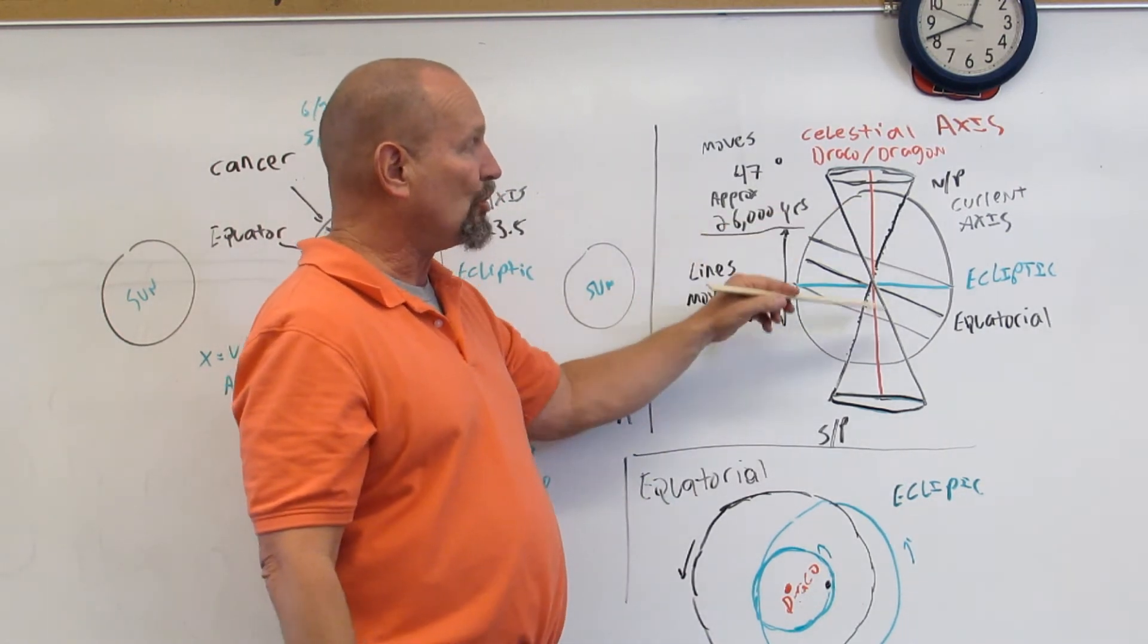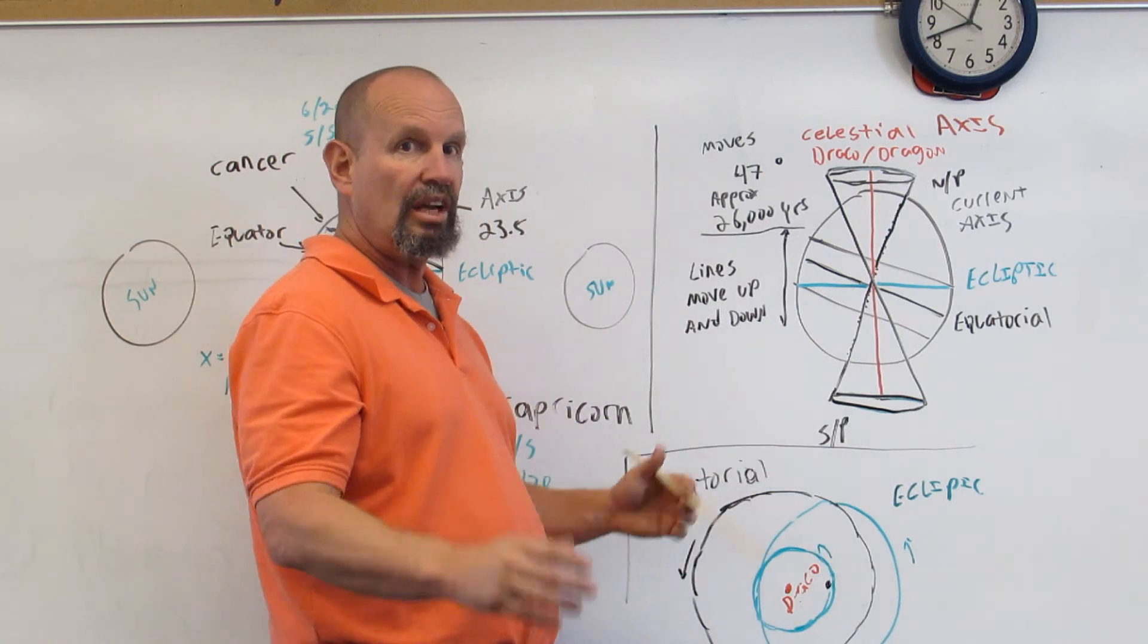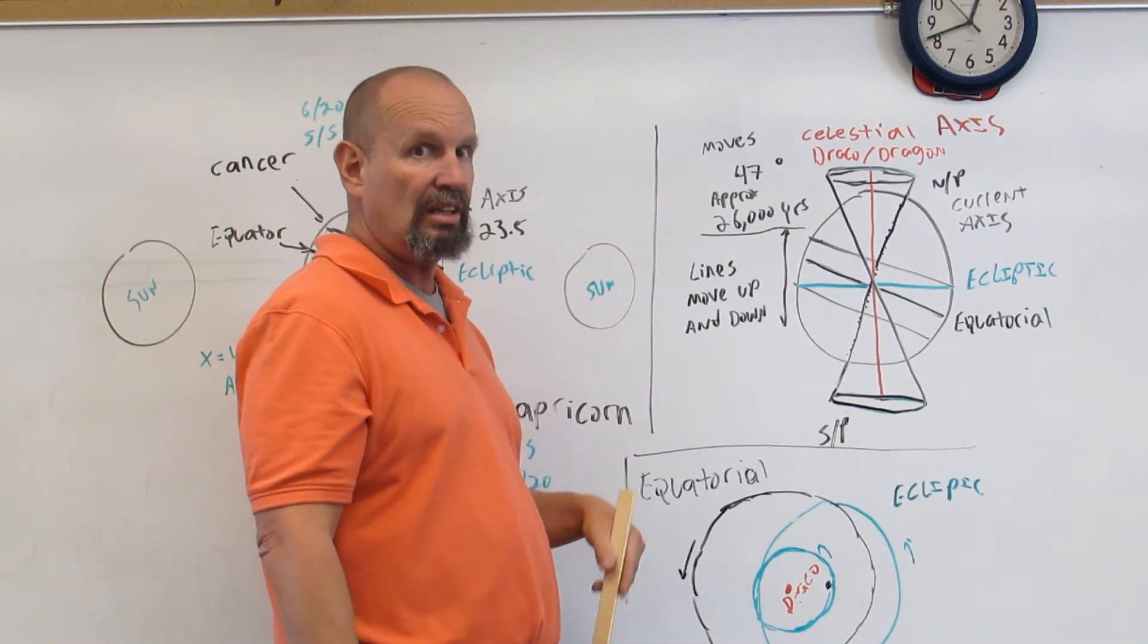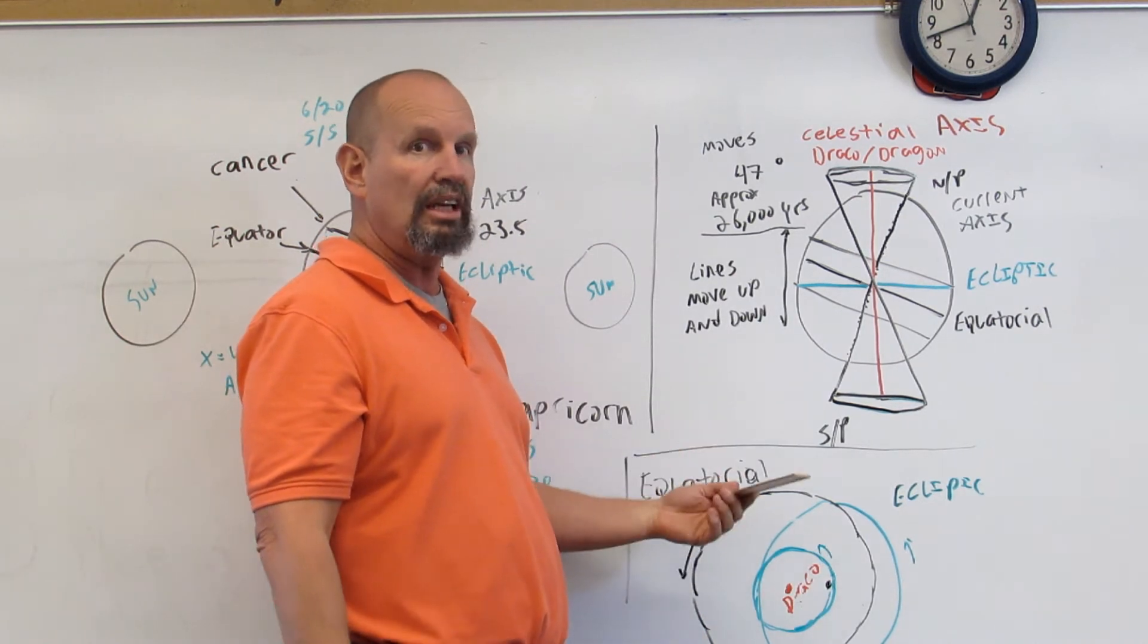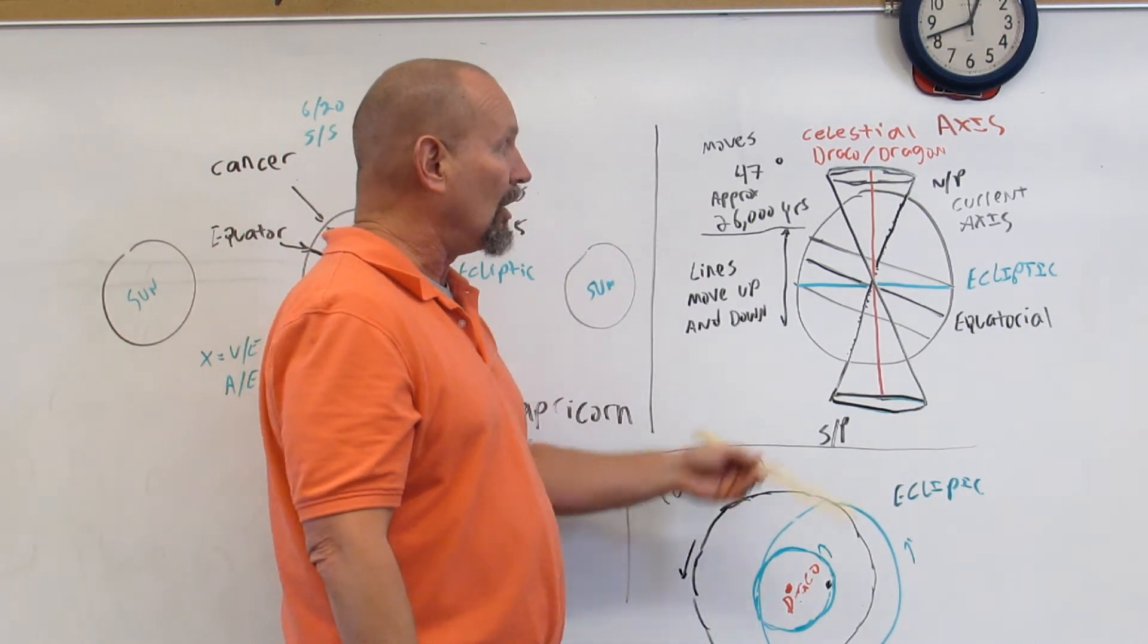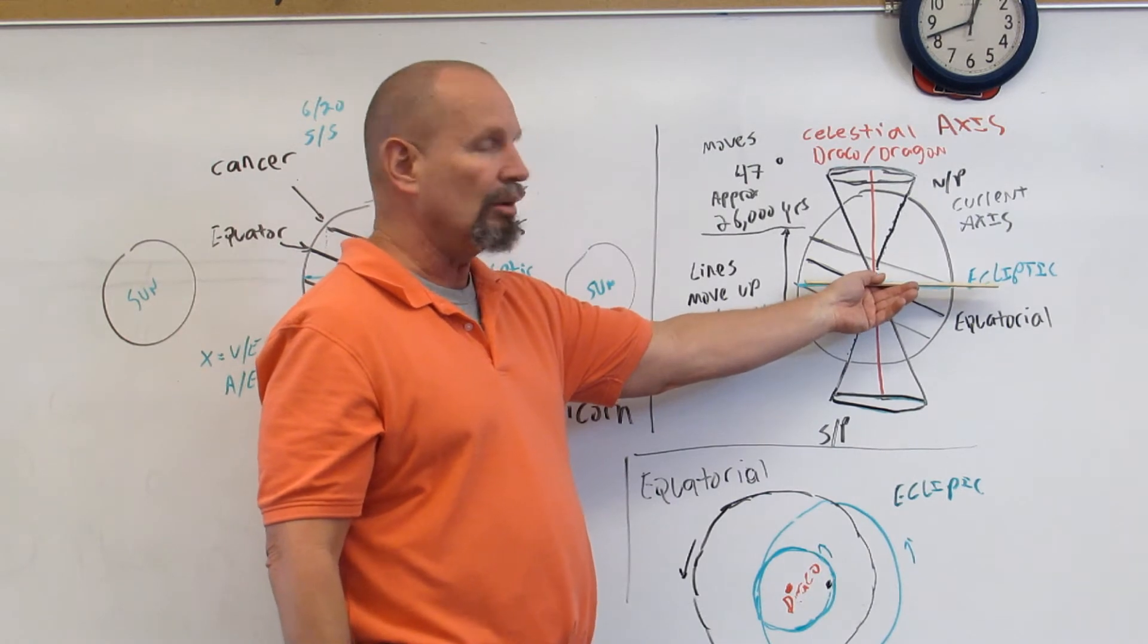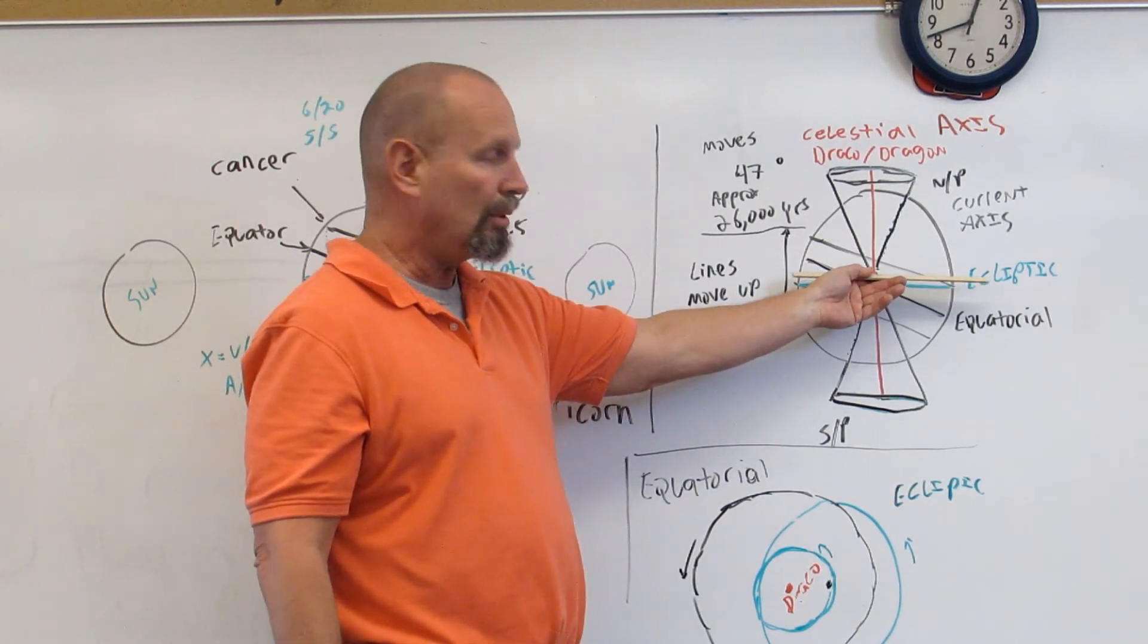The equator and the tropics would have been at a different orientation, quite significantly different orientation in the past and will again in the future as well. That also changes our orientation to the ecliptic line as well.